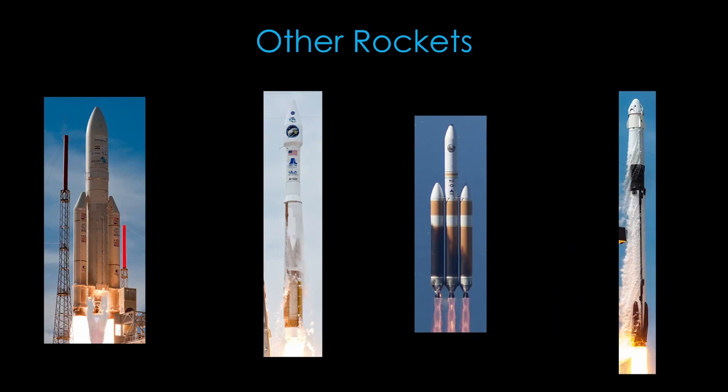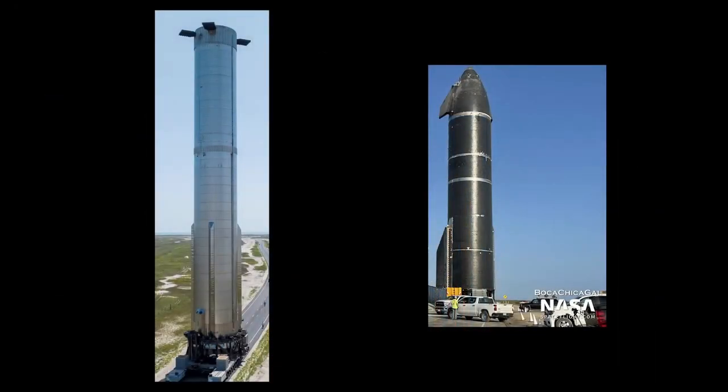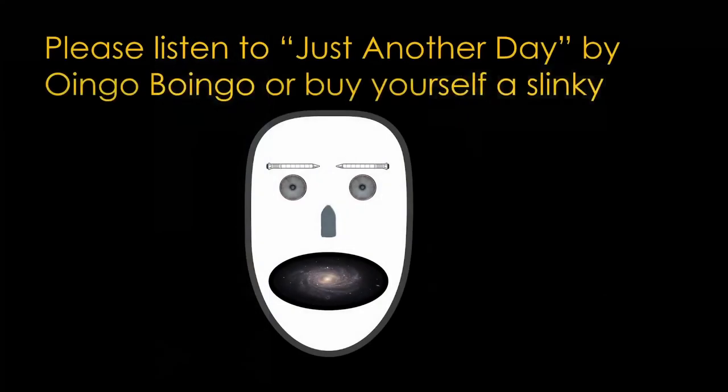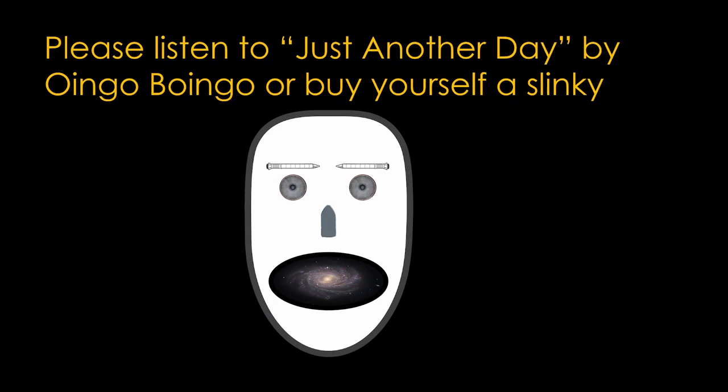What about other rockets? There aren't a lot of details available other than mention that Ariane, Atlas V, Delta IV, and Falcon 9 all use anti-pogo measures. What about Starship and Super Heavy? Super Heavy has the advantage of having a lot of engines, so many that instabilities might not be a problem on ascent, though it will use a small number of engines to land. Starship is likely in a similar situation. My guess is that SpaceX is probably using pogo control techniques, either traditional ones or active controls. If you enjoyed this video, please listen to Just Another Day by Oingo Boingo, or buy yourself a slinky.